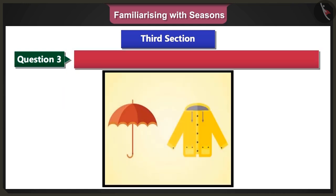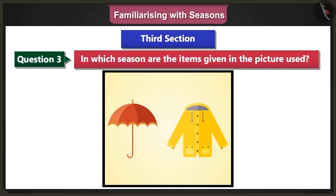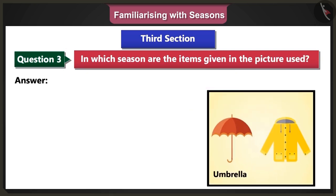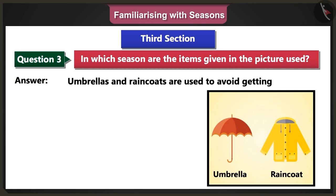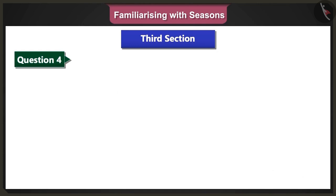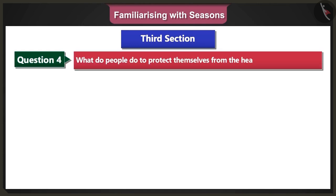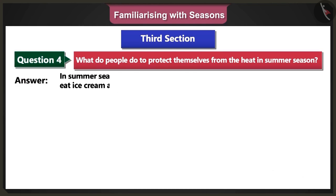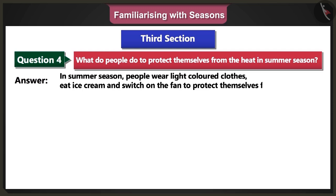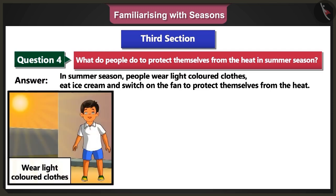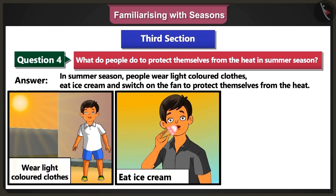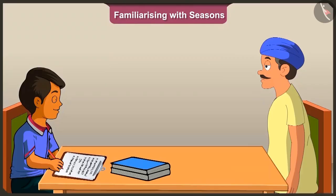Third question: in which season are the items given in the picture used? Answer: umbrellas and raincoats are used to avoid getting wet during the monsoon season. Fourth question: what do people do to protect themselves from the heat in summer season? Answer: in summer season, people wear light colored clothes, eat ice cream and switch on the fan to protect themselves from the heat.